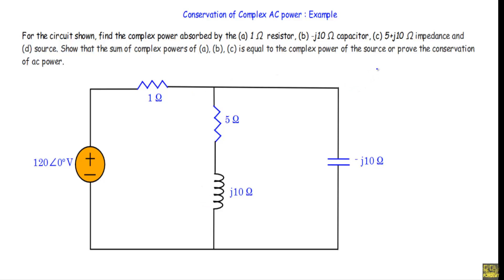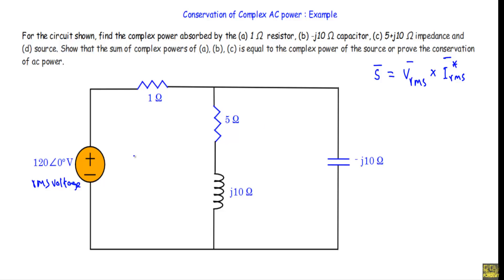To calculate complex power, we use this formula: complex power is a complex quantity equal to the RMS value of voltage multiplied by the complex conjugate of the RMS value of current for that branch or source. Here, the 120 volt at phase angle zero degrees is an RMS voltage, so all voltages and currents in the circuit will be RMS quantities.